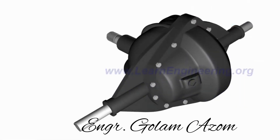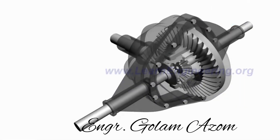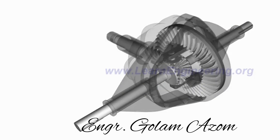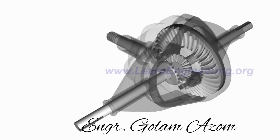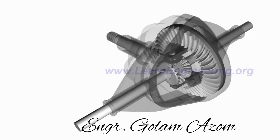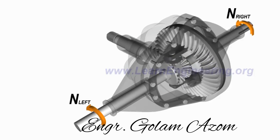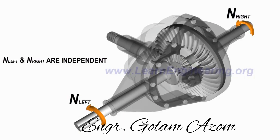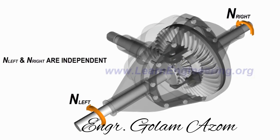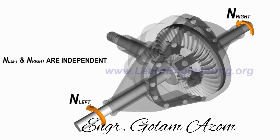The ingenious mechanism in a differential allows left and right wheels to turn at different RPM while transferring power to both wheels. We will learn how the differential achieves this in a step-by-step manner using its simplest configuration.